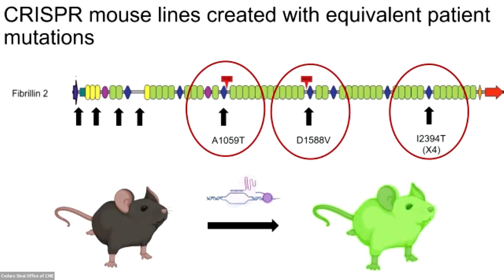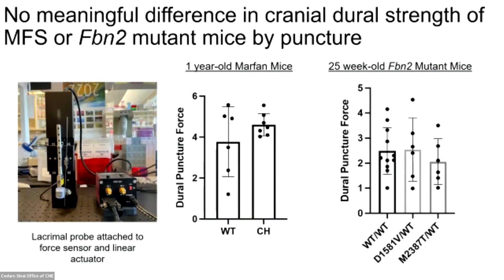We've begun undertaking multiple approaches to assess the biomechanical integrity of the dura. As one example, we designed a device that tests the force required to puncture the dura overlying the parietal lobe of the brain. We make bilateral craniotomies of a consistent size and location based on a 3D printed guide, then use a blunt lacrimal probe to puncture the dura at a consistent speed to measure puncture force. As a positive control, we tested Marfan syndrome mice, expecting a weaker dura. However, we did not see a difference in cranial dural strength between Marfan mice and littermate controls, nor between fibrillin 2 mutant mice and their littermate controls, so we are developing a more sensitive test.